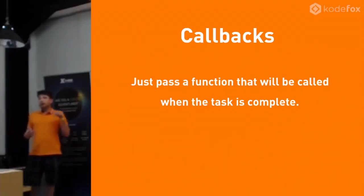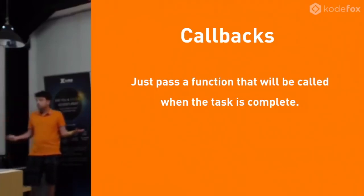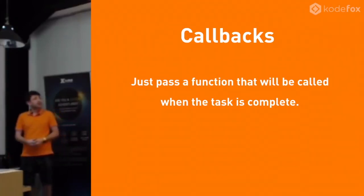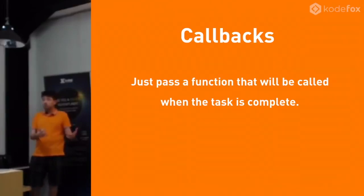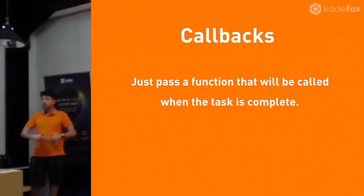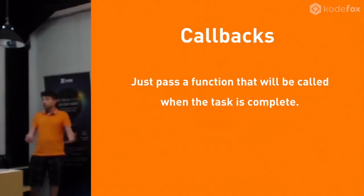So how do we write concurrent software without blocking? Generally in JavaScript world we use callbacks. We just pass a function, and when the task is finished, JavaScript will call our function. That would be, for instance, an onclick event — you pass a function to the browser, and whenever a user clicks a button, your callback gets fired. Similarly, with a network request, you're waiting for the request to finish and then the callback happens.